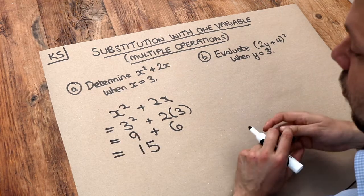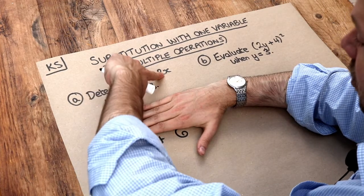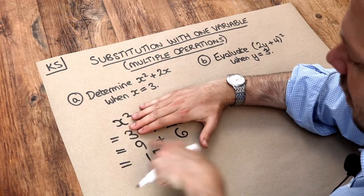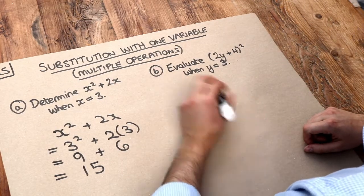And I should add that if you're able to skip straight to that step because you realize 3 squared instantly is 9, and 2 times 3 is 6, it just saves you a bit of working and a bit of time.